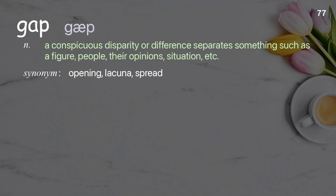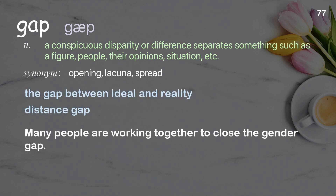Gap: a conspicuous disparity or difference that separates something such as a figure, people, their opinions, or situation. Examples: the gap between ideal and reality; distance gap. Many people are working together to close the gender gap.